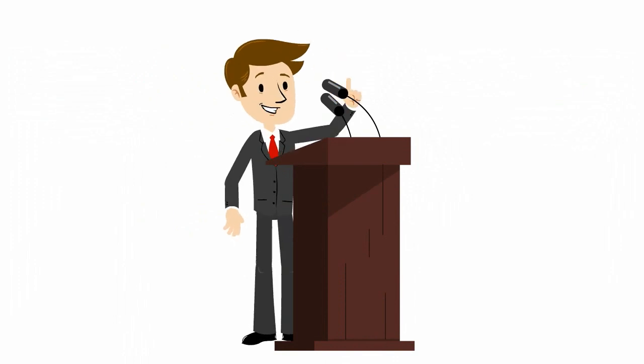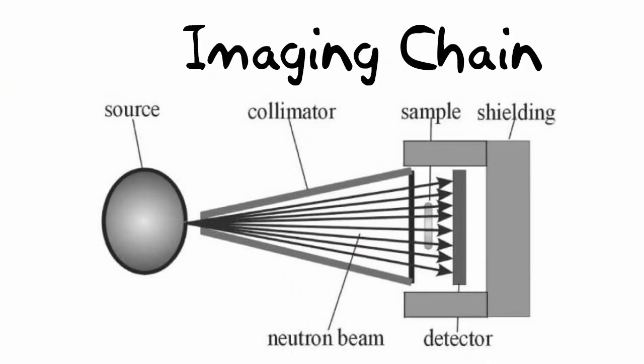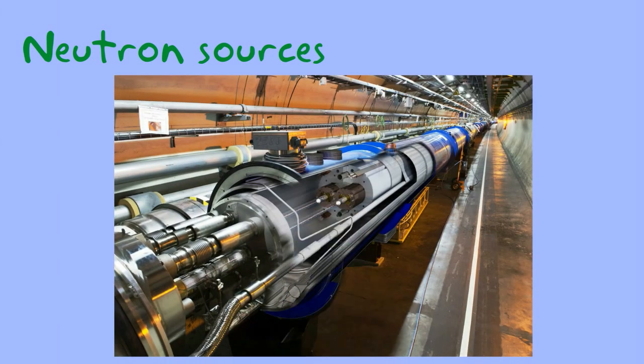Let us now delve into the parts of the imaging chain, starting off with the neutron source. Generally, there are three types of sources of neutrons: accelerator, radioactive materials, and nuclear reactors.